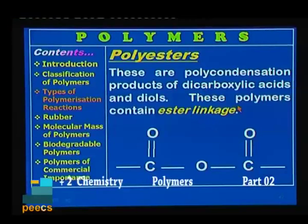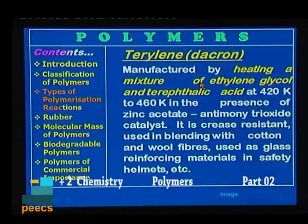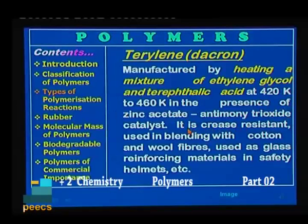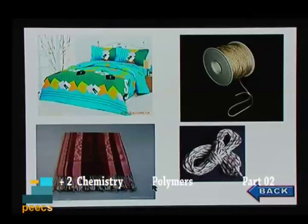Next are polyesters — polycondensation products of dicarboxylic acids and diols. Diols are dihydric alcohols containing two OH groups per structure. These polymers contain ester linkage, hence they are called polyesters. Terrylene, also known as dacron, is manufactured by heating a mixture of ethylene glycol and terephthalic acid at 420 K to 460 K in the presence of zinc acetate and antimony trioxide catalyst. It is crease resistant and used for blending with cotton and wool fibers, as glass reinforcing material, and in safety helmets.